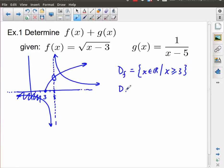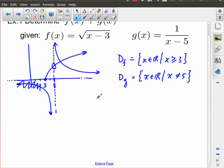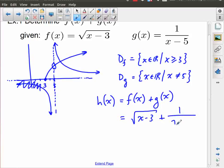The domain of G is going to be X member of R, such that X is not equal to 5. So let's now take a look at our new function, and for the sake of labeling, I'm just actually going to call this one H of X is equal to F of X plus G of X,